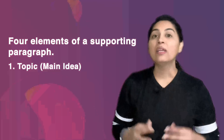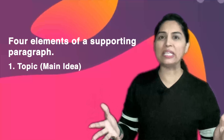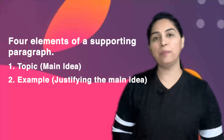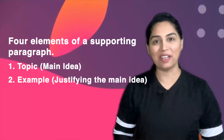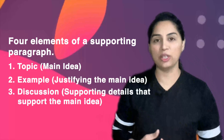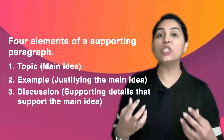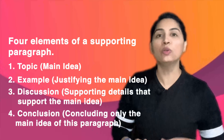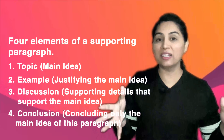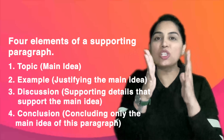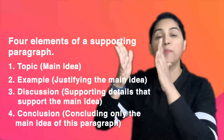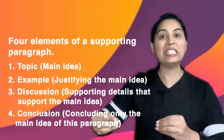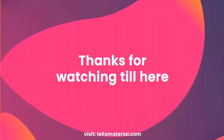Number 1: Topic — the main idea or the first reason of your opinion. Number 2: Example — this will help you justify your main idea. Number 3: Discussion — the supporting details which will help to support the main idea. And finally, Number 4: Conclusion. You are not going to write a conclusion of the complete essay here; it is just the conclusion of the main idea or the particular main idea to be presented in this paragraph.